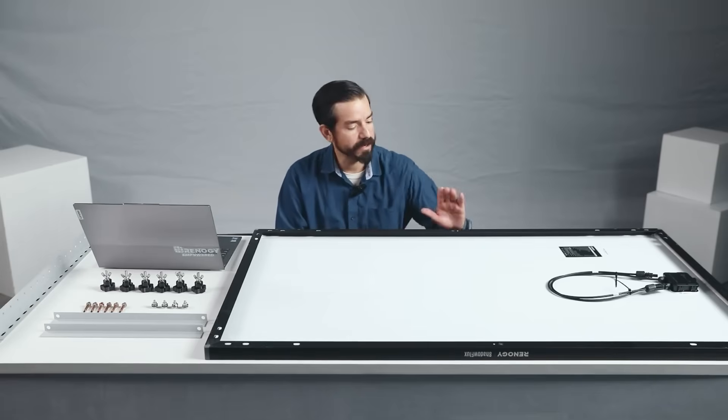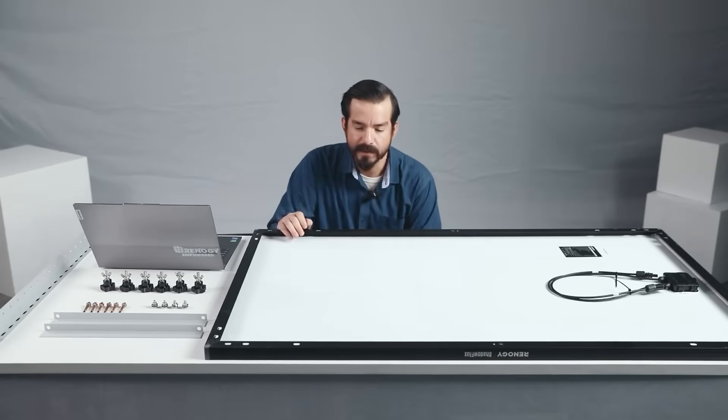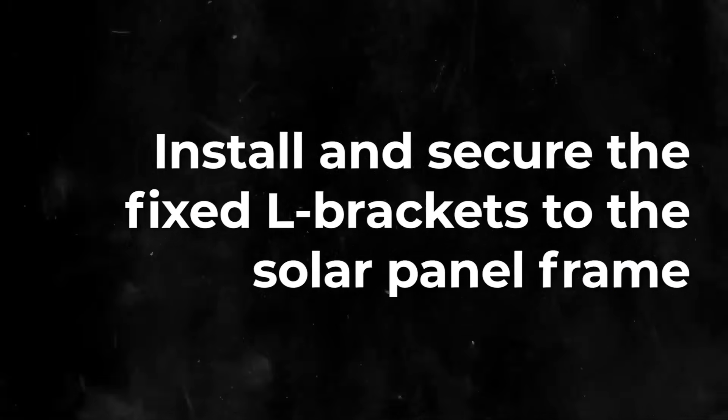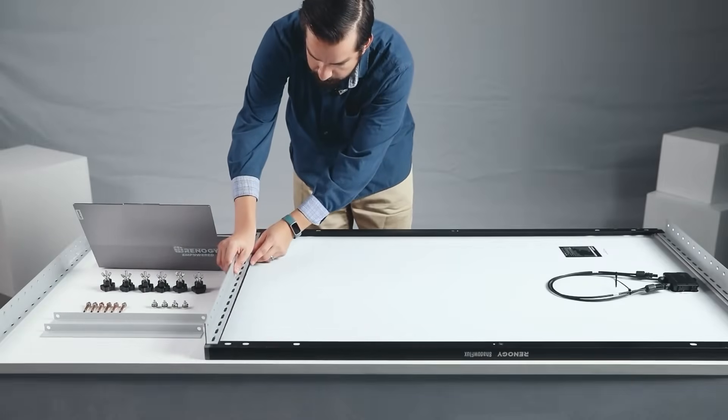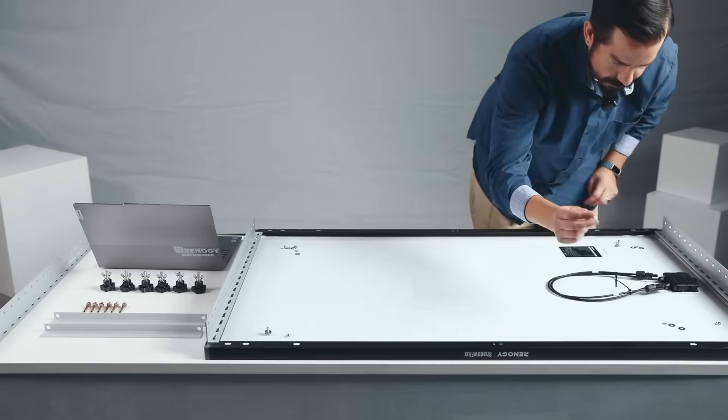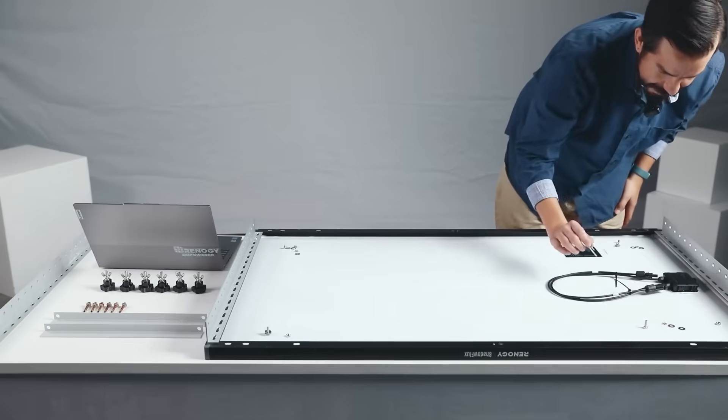Now we're going to do a quick tutorial on how you can actually mount the Shadow Flux panel with our RV tilt mount. So here we have our 200-watt Shadow Flux panel. Put them onto the panel like so. Each set is going to come with your bolt, two washers, lock nut, and your nut.